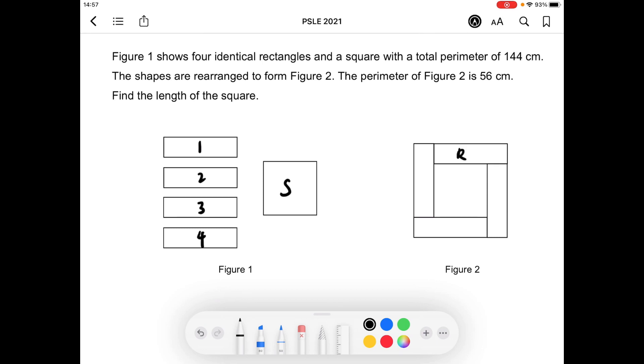Here are the 4 rectangles (1, 2, 3, 4) and the square is in the middle. The perimeter of Figure 2 is 56 centimeters.